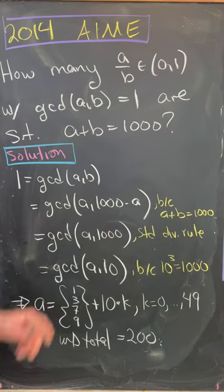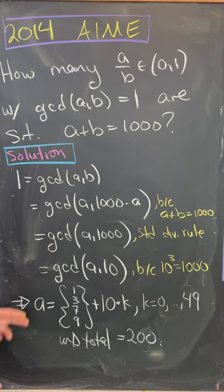Then the GCD of A and 1,000 is 1. That's a standard divisibility rule. Finally, the GCD of A with 10 is 1 because 10 cubed is 1,000.